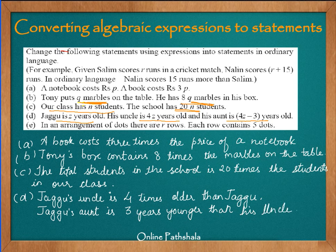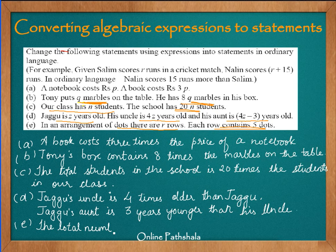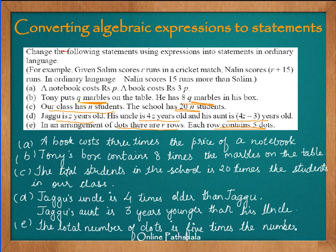Statement E says that in an arrangement of dots there are rows and each row contains 5 dots. The total number of dots is 5 times the number of rows. This is how we can convert algebraic expressions into normal statements.